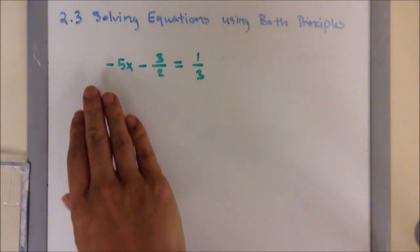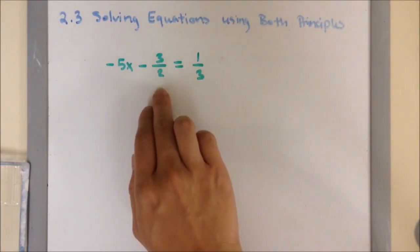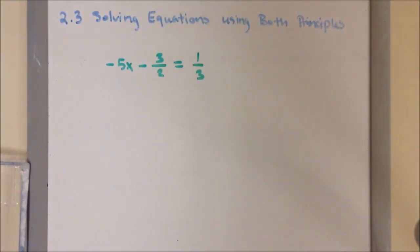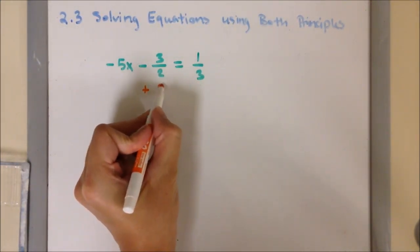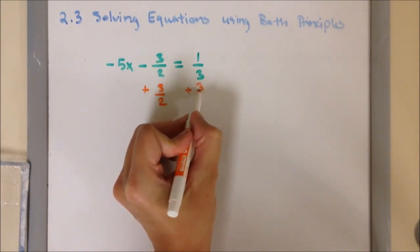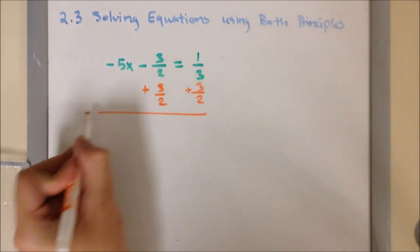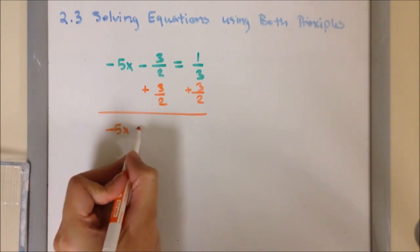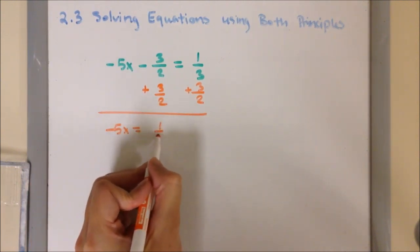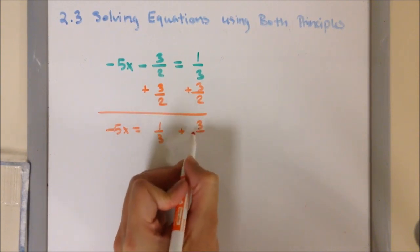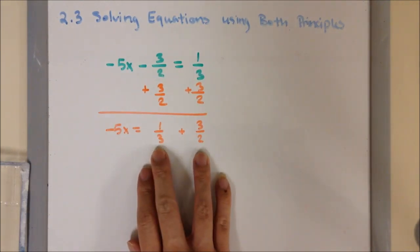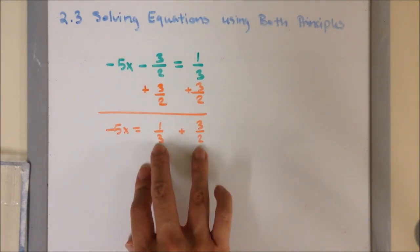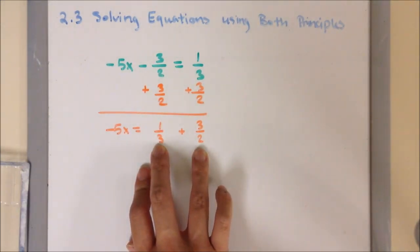Example 3: we have negative 5x minus 3/2 equals 1/3. First, we are going to apply the addition principle. I am going to add 3/2 on both sides. So, negative 5x equals 1/3 plus 3/2. Notice that we have different denominators in our fractions. Take a look at 3 and 2 — the common denominator between 3 and 2 is 6.